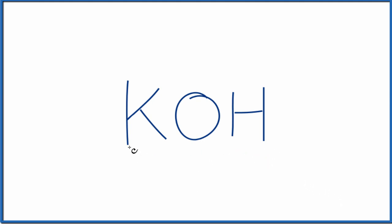First, we have potassium, that's a metal in group 1 on the periodic table. Then we have this OH, which is a group of nonmetals. This is a polyatomic ion called the hydroxide ion.